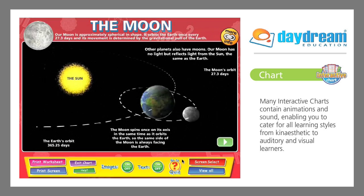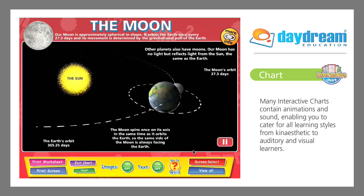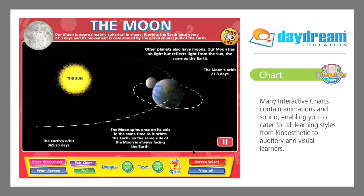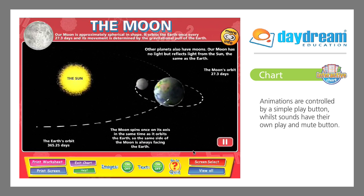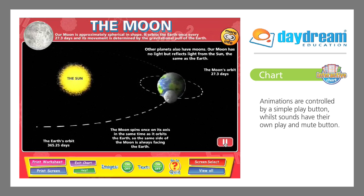Many interactive charts contain animation and sound, enabling you to cater for all learning styles, from kinesthetic to auditory and visual learners. Animations are controlled by a simple play button, while sounds have their own play and mute button.